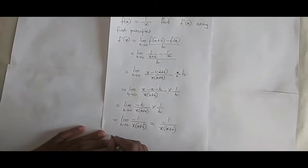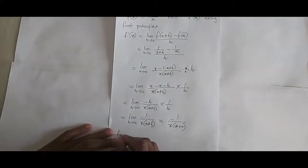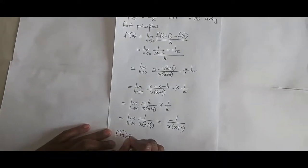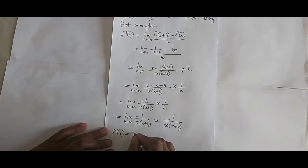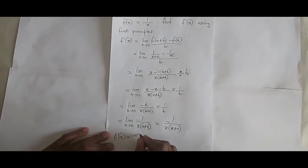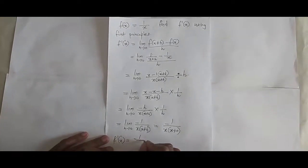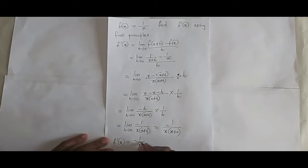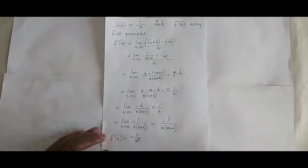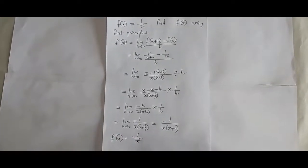Simplifying there, it now becomes f dash of x is now equal to minus 1 over x squared. Thank you so much, God bless you.